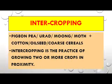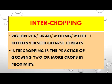Intercropping: Laser intercropping is promoted under the National Food Security Mission. Intercropping is the practice of growing two or more crops in proximity. Under the National Food Security Mission, Pigeon Pea, Urad, Moong, and Moth can be cultivated along with any crop like cotton, oilseeds, coarse cereals, etc.